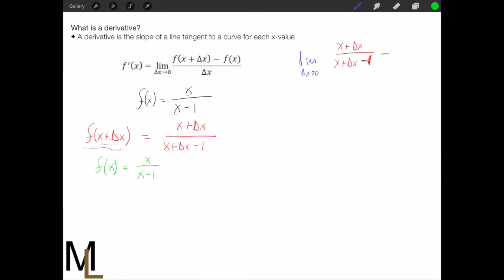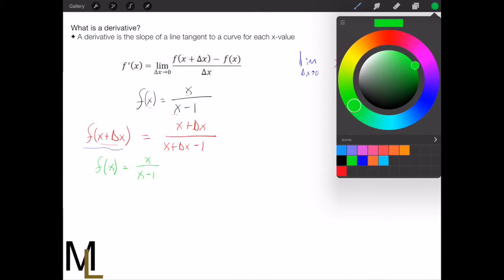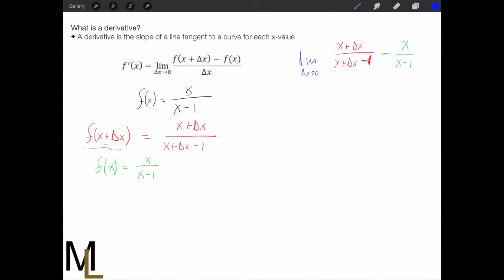So when we subtract it we get x over x minus 1. And then finally don't forget all of it divided by delta x.